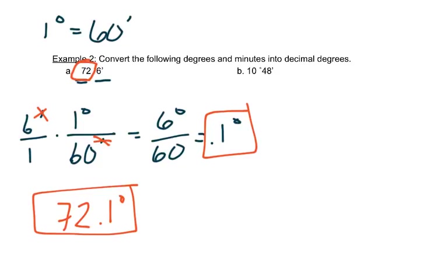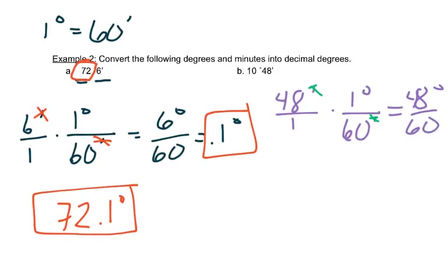So let's do the same thing over here. We have 48 minutes over 1 times 1 degree over 60 minutes. The minutes will cancel out. If we multiply straight across that gives us 48 degrees over 60. I take 48 divided by 60, I get 0.8 degrees. I'm going to add that back to the 10 and I get 10.8 degrees.